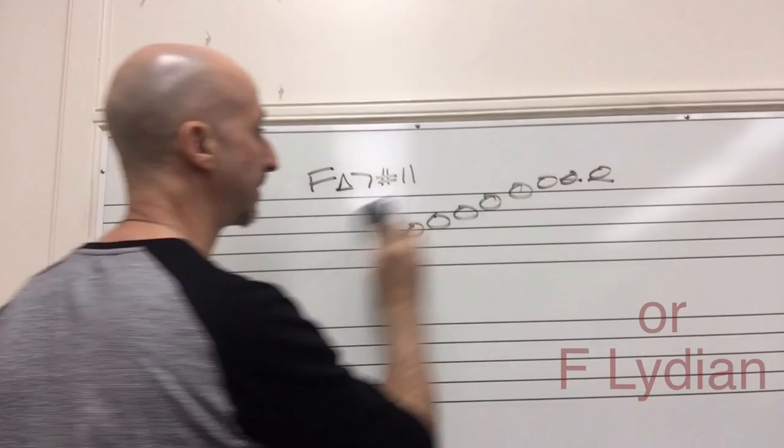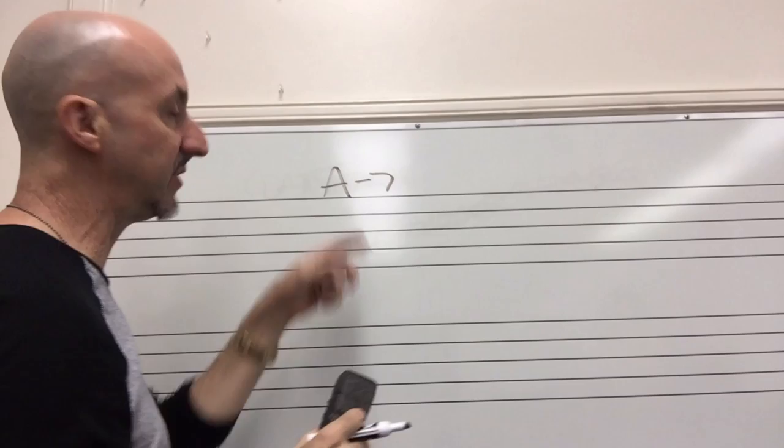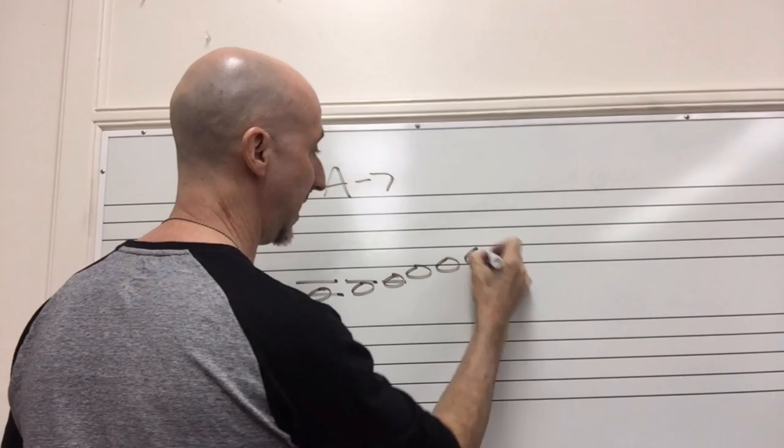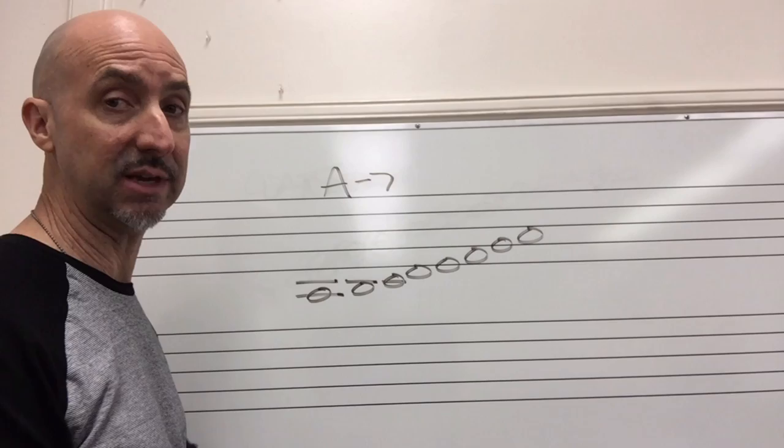What if we've got A minor seven? We can use Dorian minor, but what if we do natural minor? A natural minor is A, B, C, D, E, F, G, A—the sixth mode of the major scale, or the Aeolian mode. Take a look at this. Doesn't this look like a C major scale starting on A?